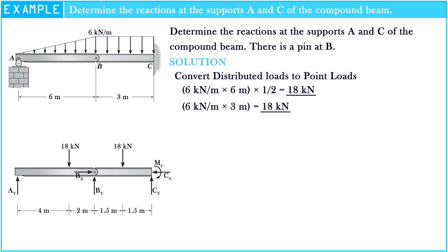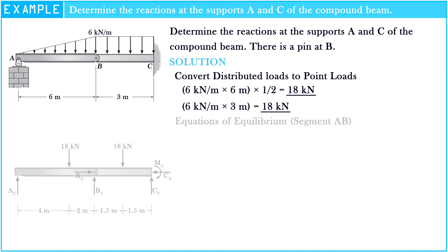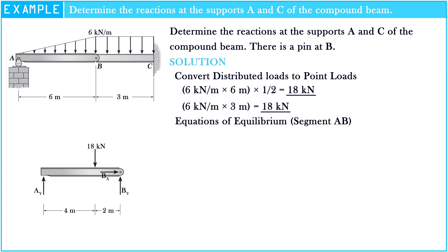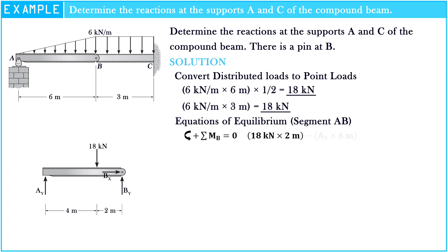Now let's apply the moment equation of equilibrium about points A and B respectively. The sum of moments at point B equals 0: 18 kN multiplied by 2 meters minus AY multiplied by 6 meters equals 0. Hence, AY equals 6 kN.